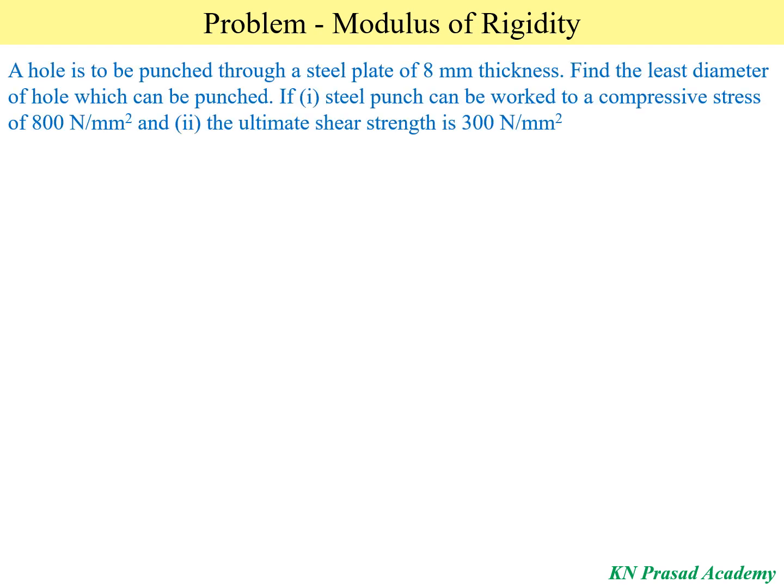A hole is to be punched through a steel plate of 8 mm thickness. Find the least diameter of the hole which can be punched if: first, the steel punch can be worked to a compressive stress of 800 newton per mm square, and second, the ultimate shear strength is 300 newton per mm square.